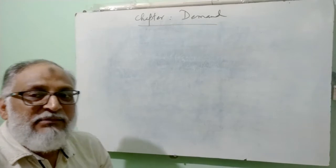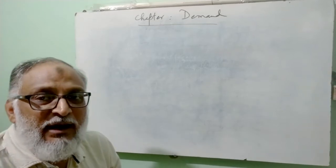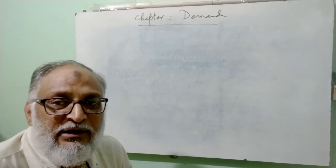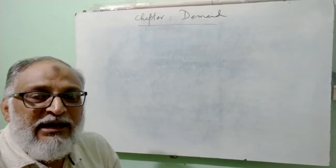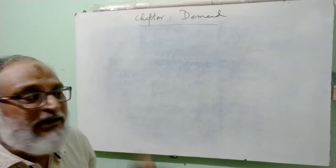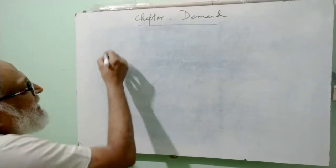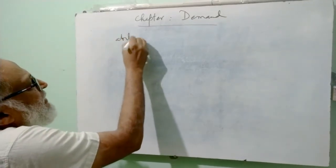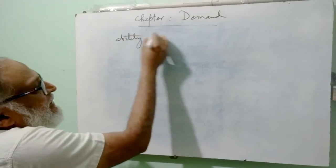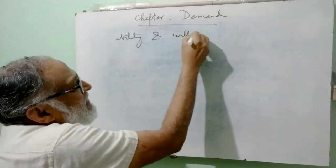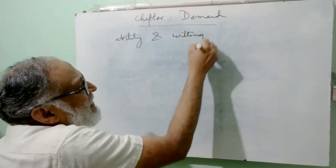So what does demand mean? Demand refers to that quantity which a consumer is able and willing to buy. For demand, two elements are essential: number one — ability, and the other is willingness.